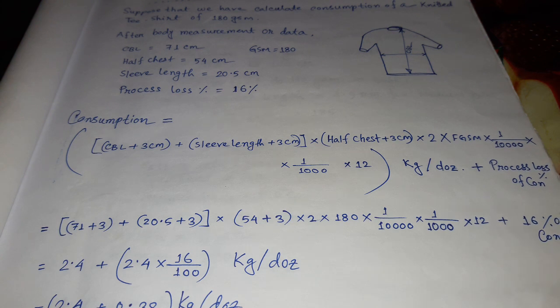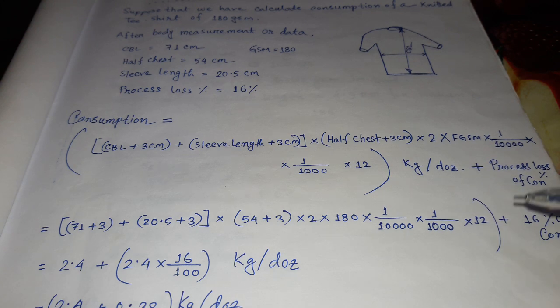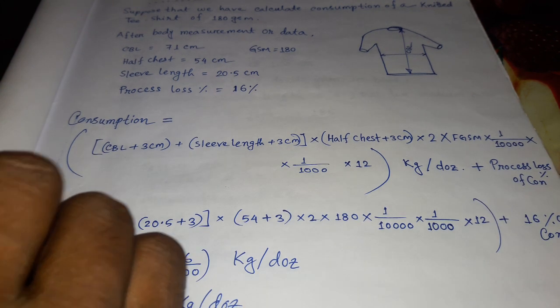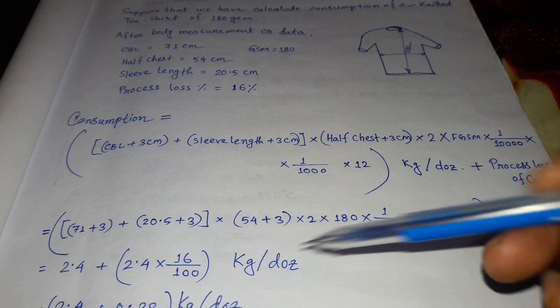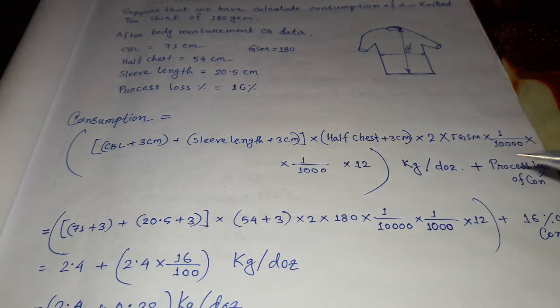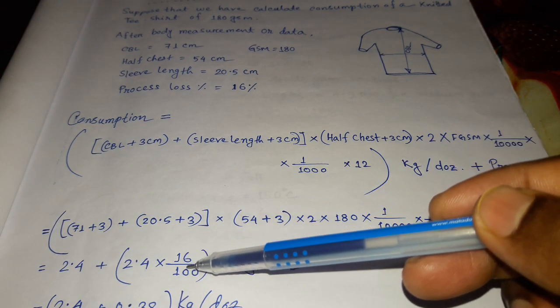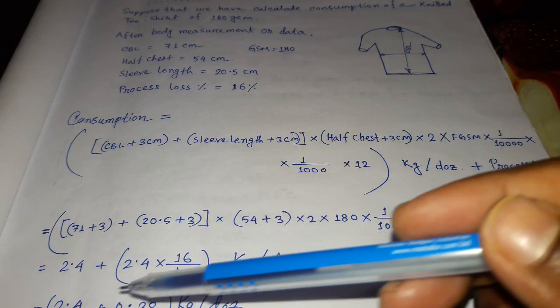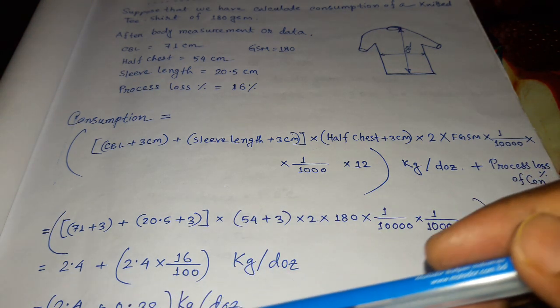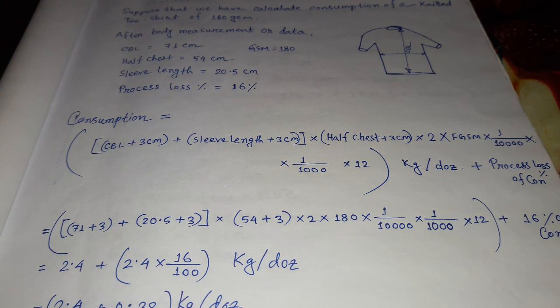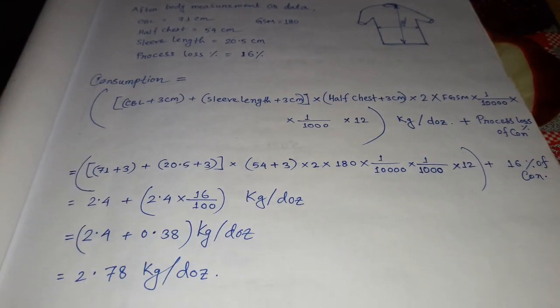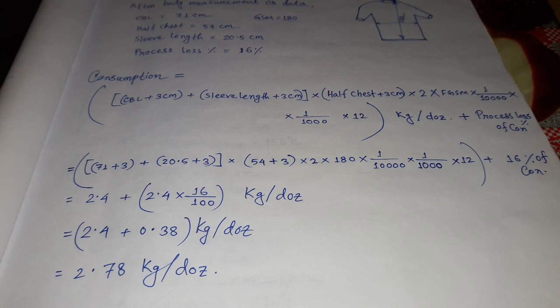So after calculation, the consumption is coming 2.78, which is 2.78 plus 16 divided by 100 kg per dozen. The calculation is coming 2.78 kg per dozen. This is the consumption of this body.